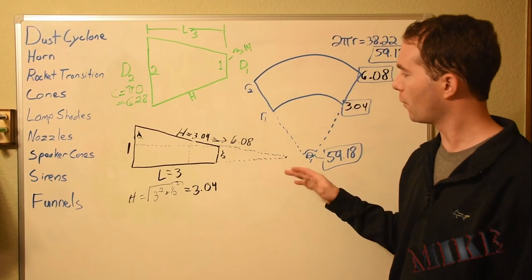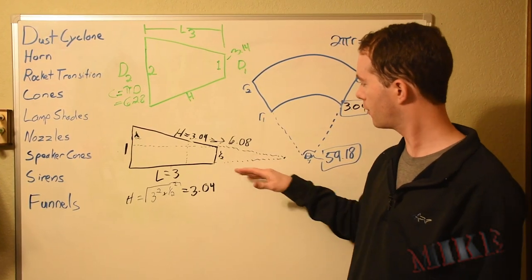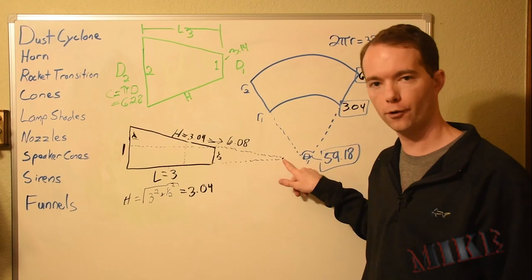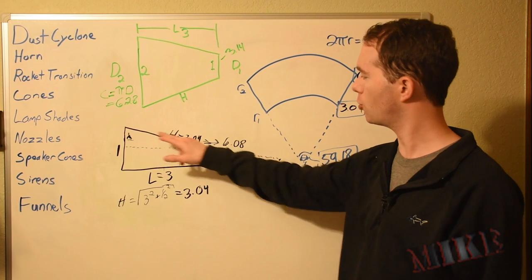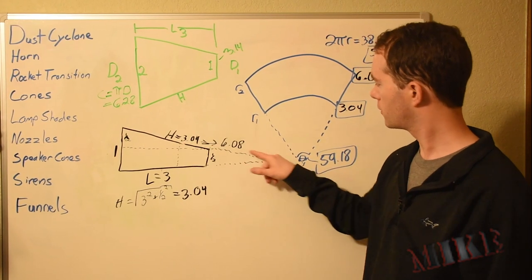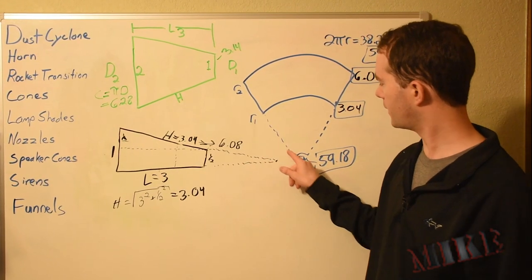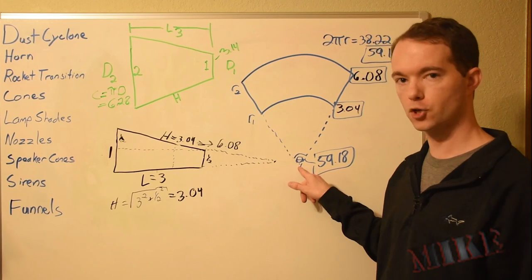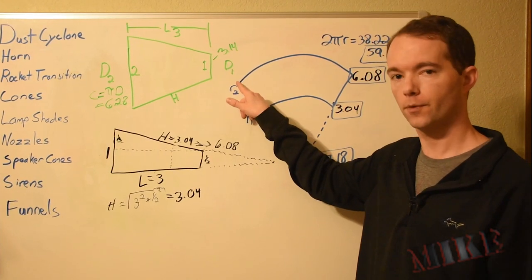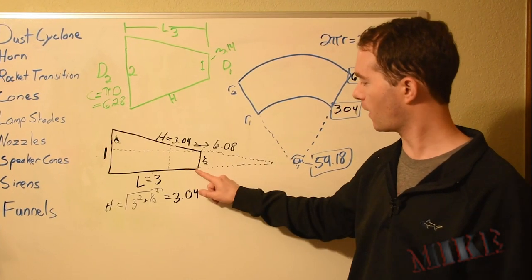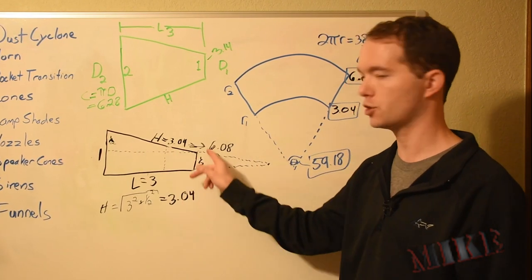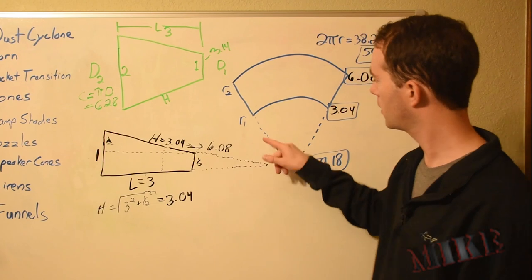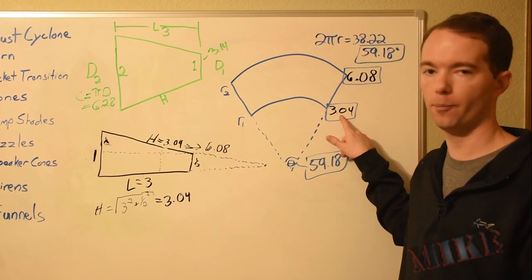Remember what we did. We found where this point would intersect if it was a full cone. We did that by using Pythagorean theorem and the slope of this line to give us 6.08. That gives us, from our start point here, our R2. We then found out what our R1 was going to be. In our case, it was exactly half, just because of the geometry of this particular shape. R1 was exactly half at 3.04.